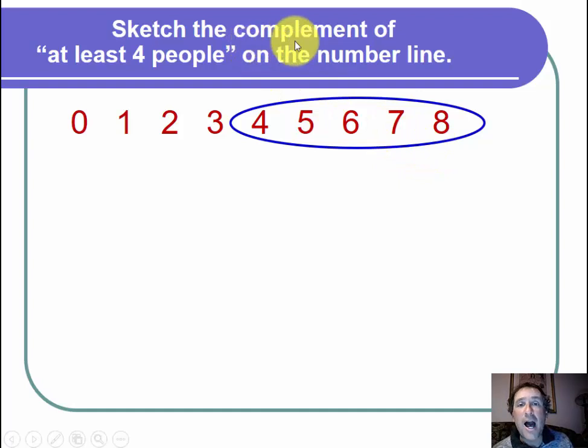Next I want to find the complement of these numbers. So the complement of a group of numbers are all the numbers that are not circled. So in particular, there are 0, 1, 2, and 3.